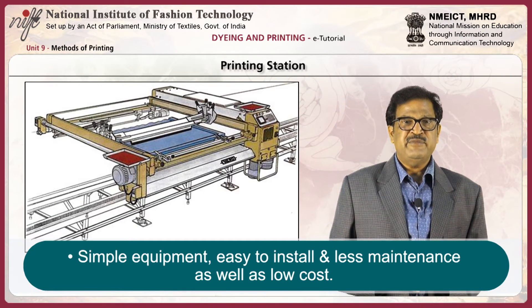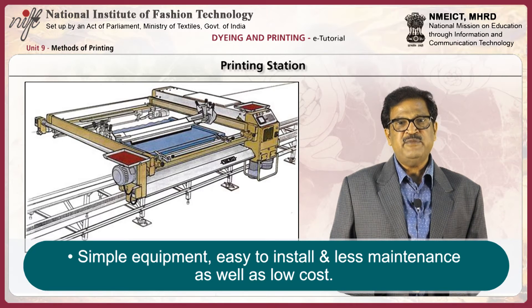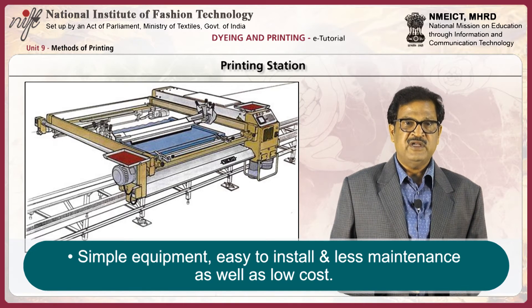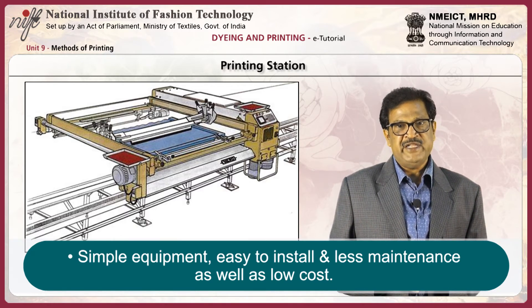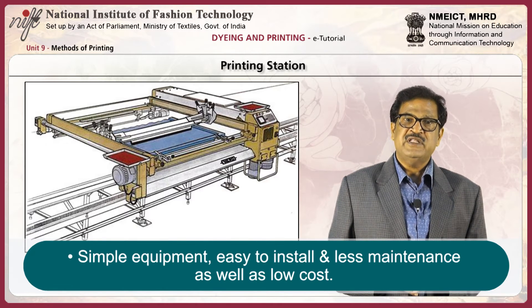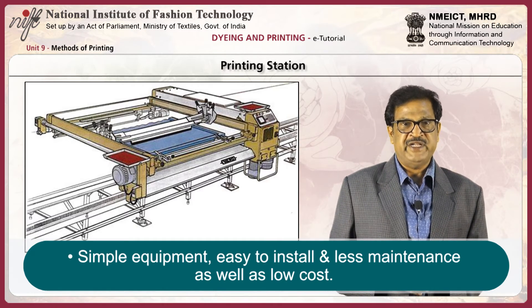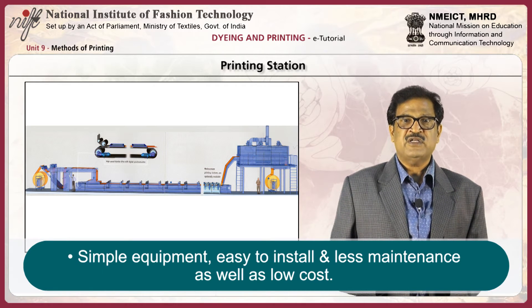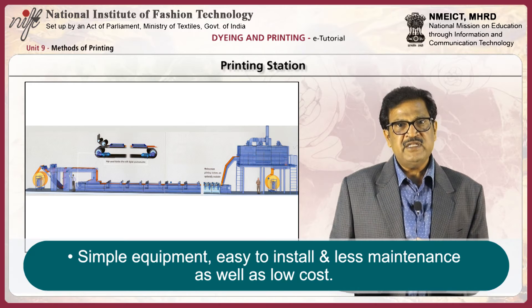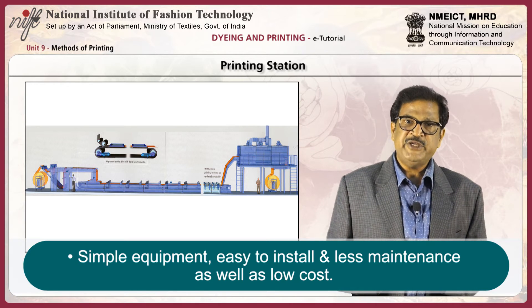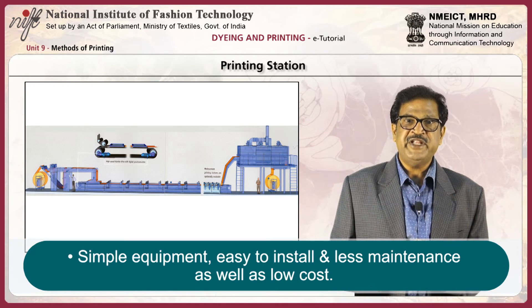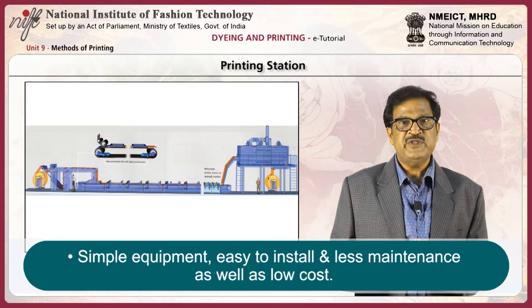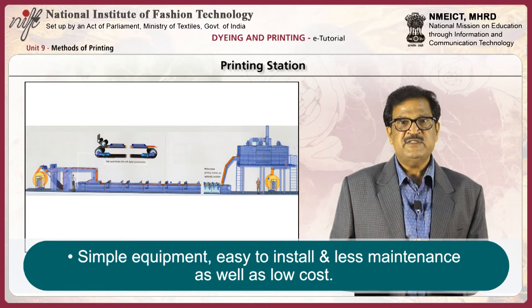There are 8 to 16 printing stations available depending on the capacity of the machine. Before the start of printing, the screens are positioned according to the repeat and order of printing. The cloth is fed and printing stations are switched on. Printing is done sequentially at various printing units and then the fabric moves to the dryer unit, where it gets dried and is finally plaited on trolleys.